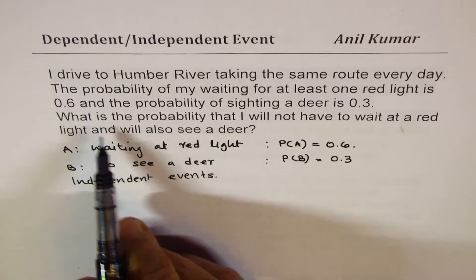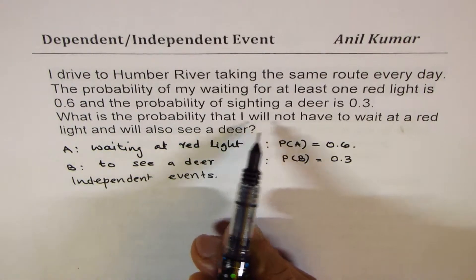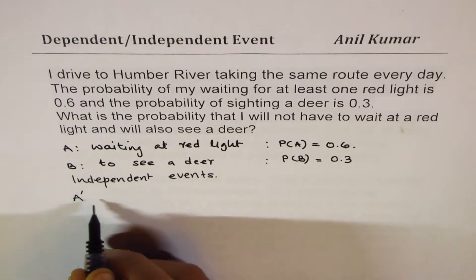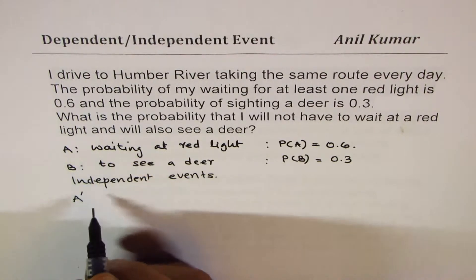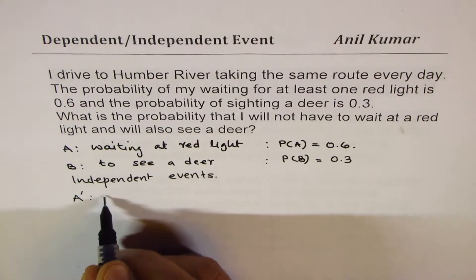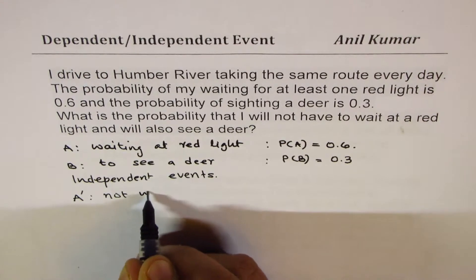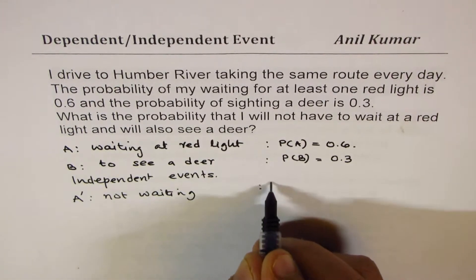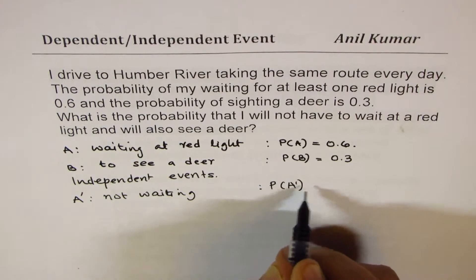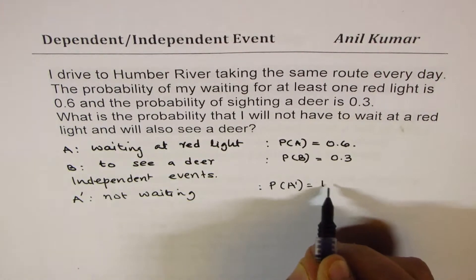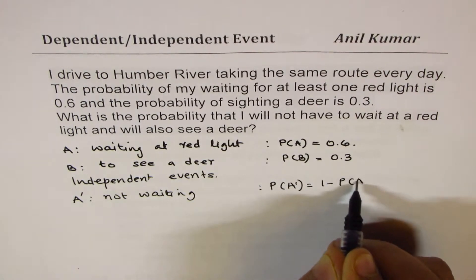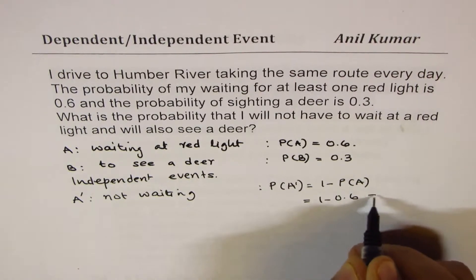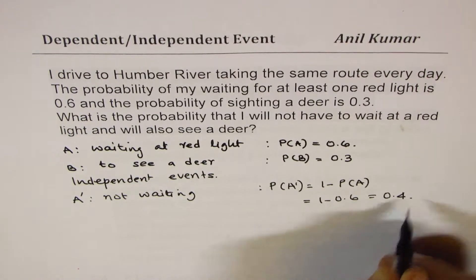What we need to find is the probability that I will not have to wait. Not having to wait will be A prime — that is, not waiting. So the probability of not waiting will be 1 minus the probability of waiting, which is 1 minus 0.6, giving us 0.4.